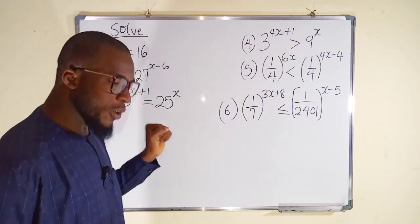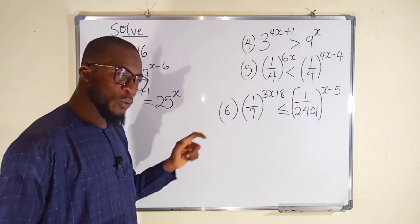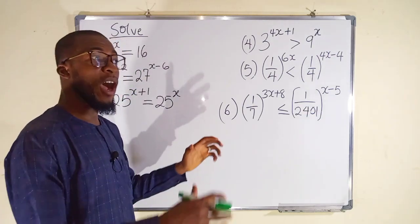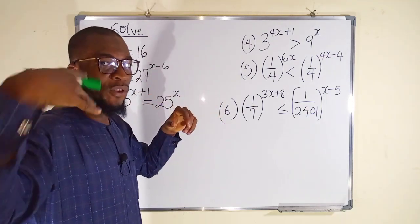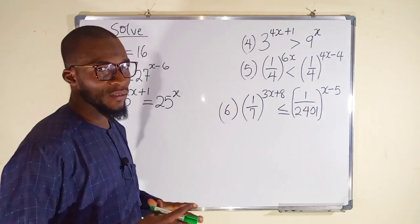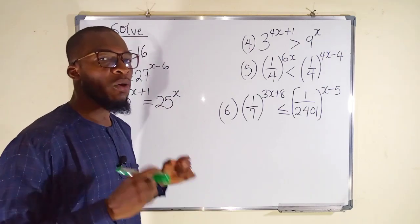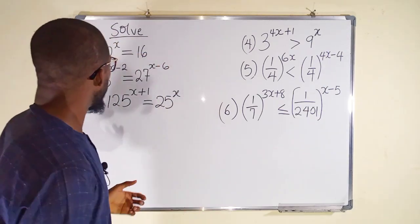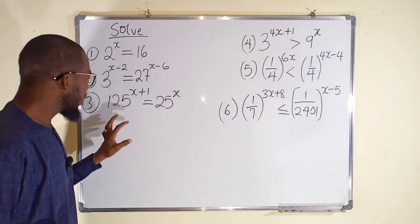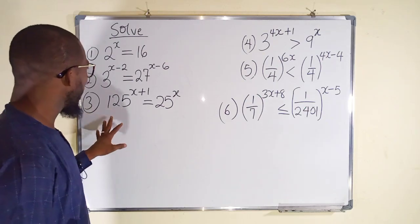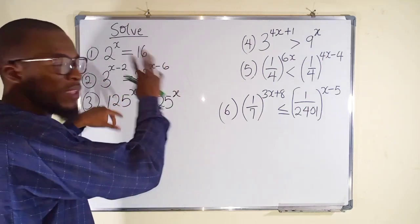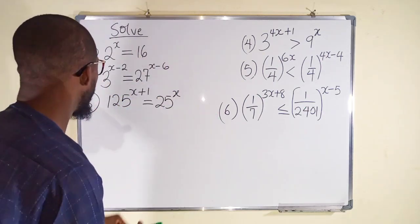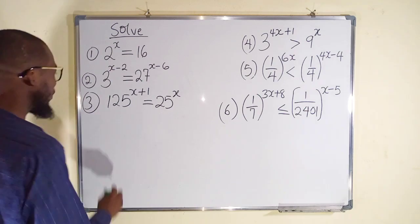From our knowledge of indicial equations, whenever you have common bases from the left to the right hand side you are always free to equate the powers. So we are going to try as much as we can to make sure we have common bases from left to right. Let's start with the first one.